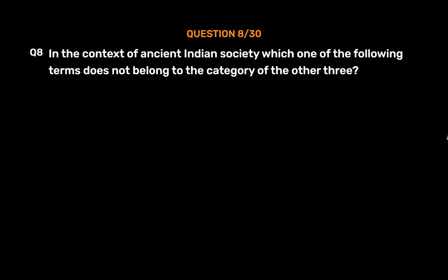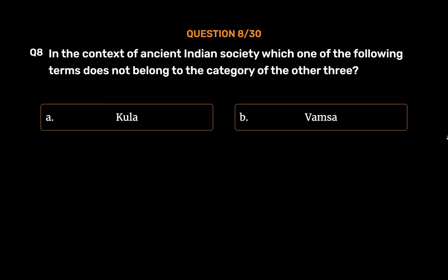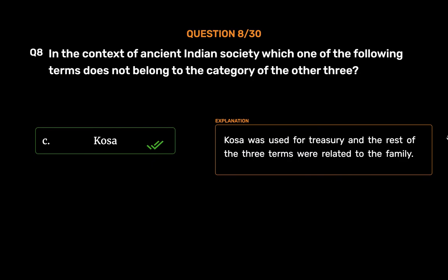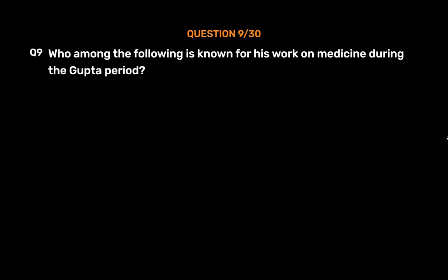Question number eight: In the context of ancient Indian society, which one of the following terms does not belong to the category of the other three? Option A: Kula, Option B: Vamsa, Option C: Kosa, Option D: Gotra. The correct answer is Option C, Kosa. Kosa was used for treasury, while the other three terms — Kula, Vamsa, and Gotra — were related to family.